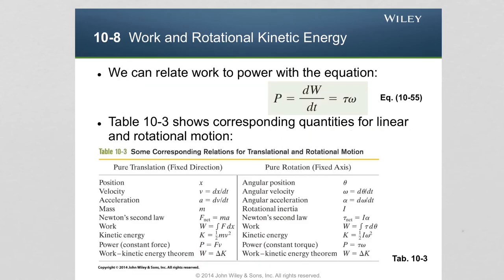Finally, power in rotation: power is the time derivative of work done. Since work equals torque times angular displacement, the time derivative of angular displacement is angular velocity. Therefore, power in rotation equals torque times angular velocity, P = τ·ω. A final table lists all quantities pertinent to linear kinematics and dynamics alongside their counterparts for rotational kinematics and dynamics.